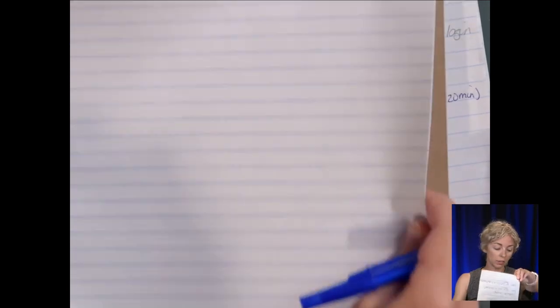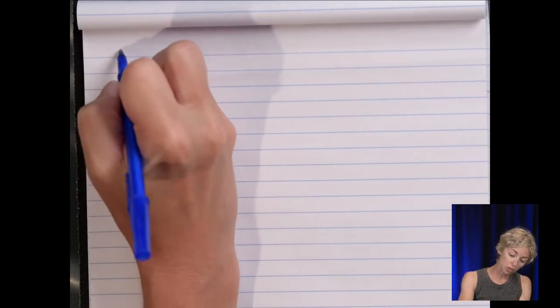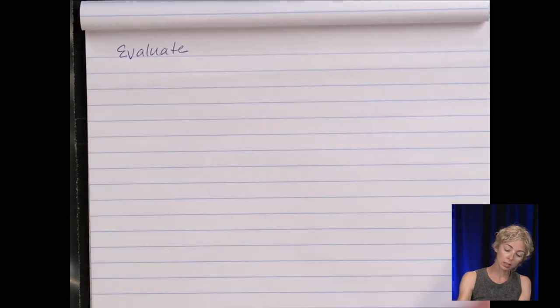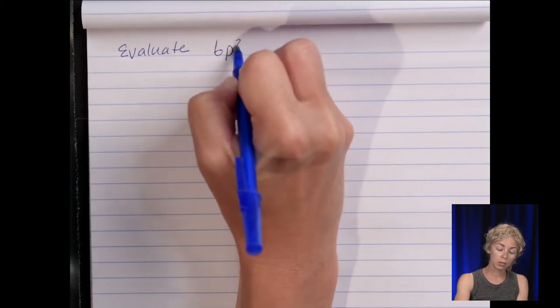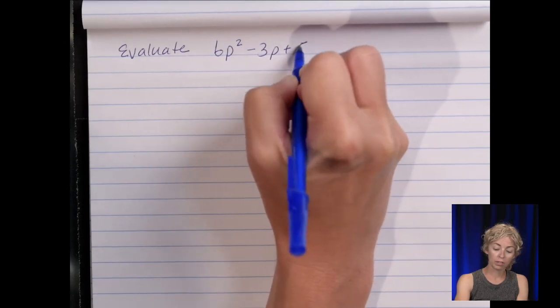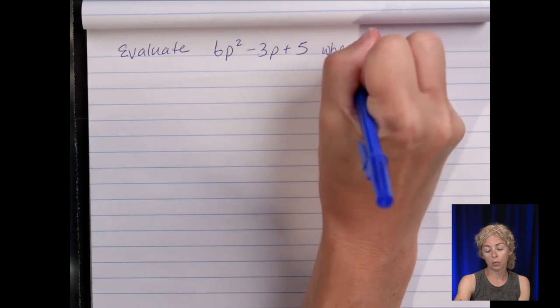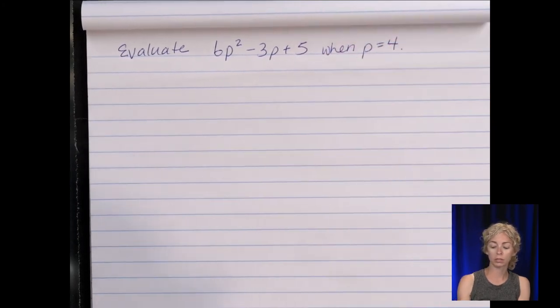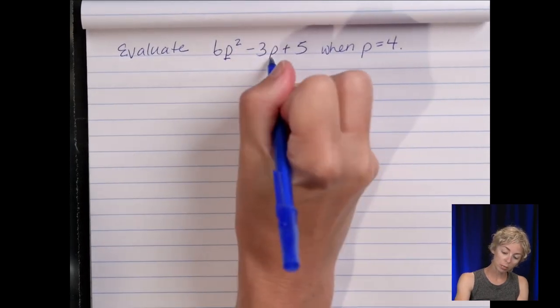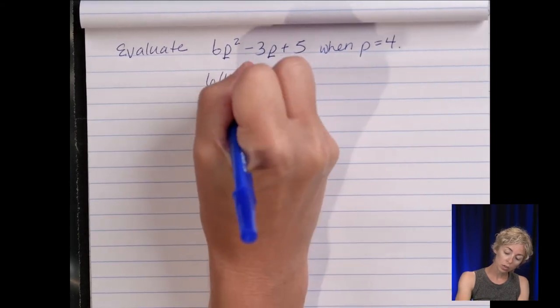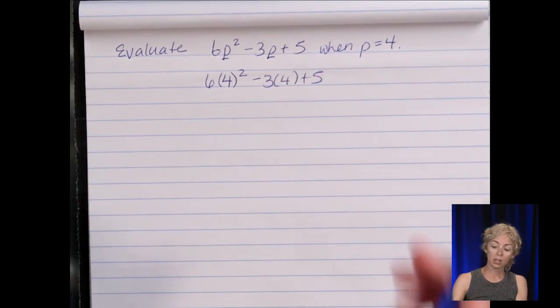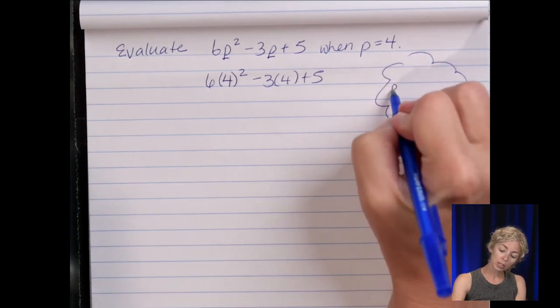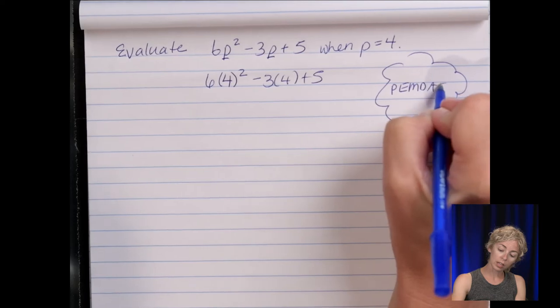Moving on to a different topic. Let's talk about the term evaluate or find the value of an expression. So let's evaluate the expression, let's say six p squared minus three p plus five when p equals four. So I substitute the four in everywhere I see p. So it's going to be six times four squared minus three times four plus five. Now this is where order of operations come into play. So a little thought bubble that's please excuse my dear Aunt Sally or PEMDAS.